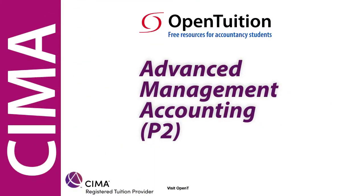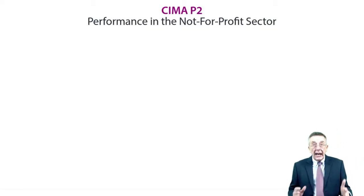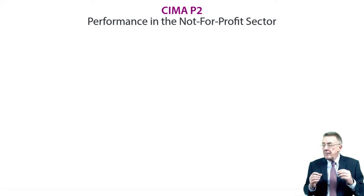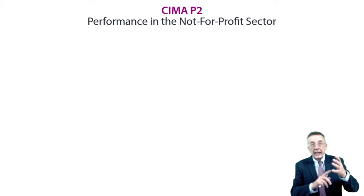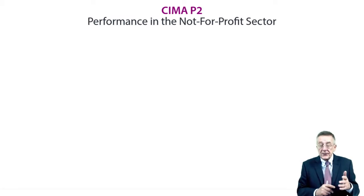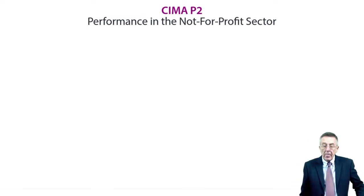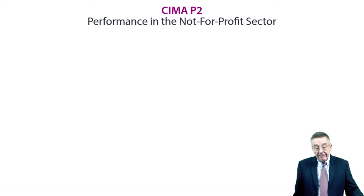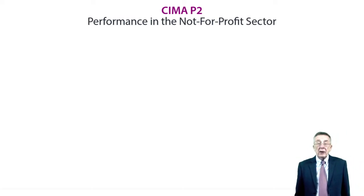This is a lecture from OpenTuition. To benefit from the lecture, you should download the free lecture notes from OpenTuition.com. This is the last lecture on the performance measurement section of the syllabus. We've already done financial performance, non-financial performance, divisional performance, and what's related to it, transfer pricing. This lecture, which is a short one, is performance in the not-for-profit sector.